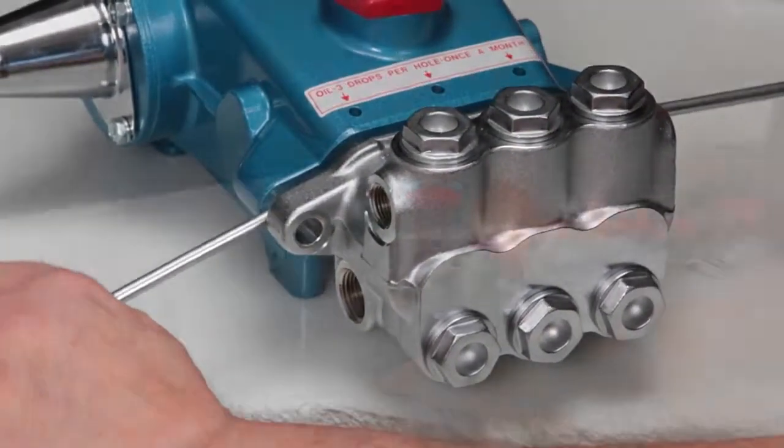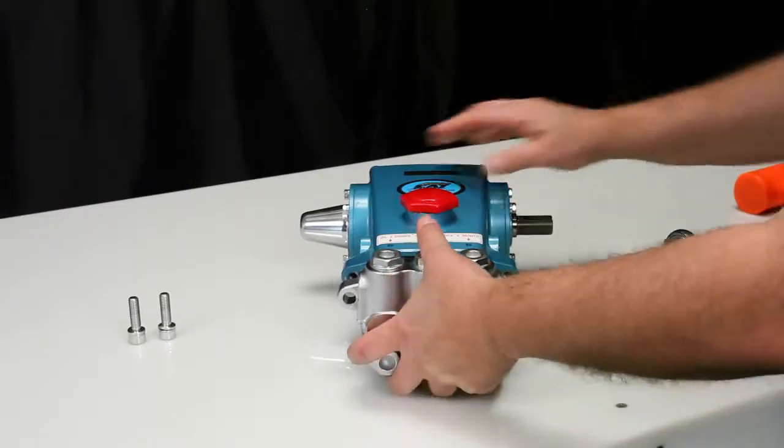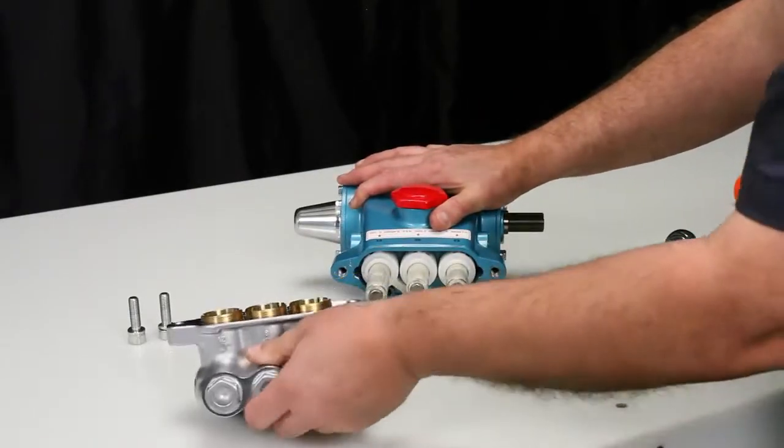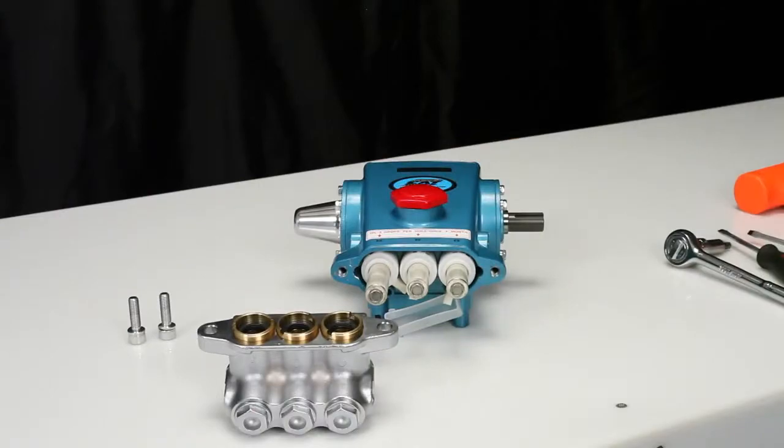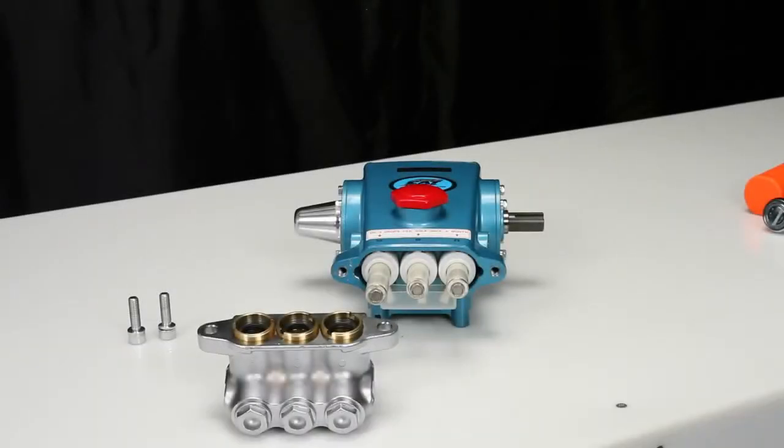While supporting the weight of the manifold, use a rubber hammer to completely remove the manifold from the crankcase. Place the manifold on a flat surface with low pressure seals facing up.